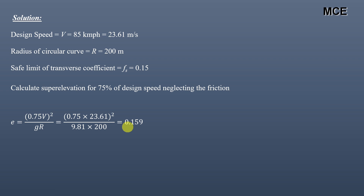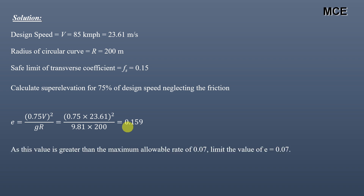If this super elevation found for 75% of the design speed is less than 0.07, then we take that as the design super elevation. But if this value is greater than 0.07, we take the design super elevation as 0.07 and find the coefficient of lateral friction. In our case, the value 0.159 is greater than the maximum allowable rate of 0.07, so we will limit the super elevation to 0.07 and find the coefficient of lateral friction.